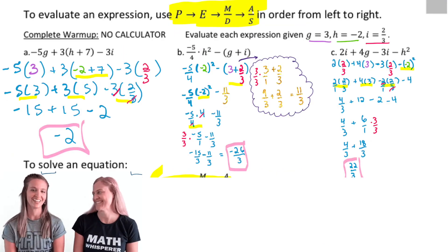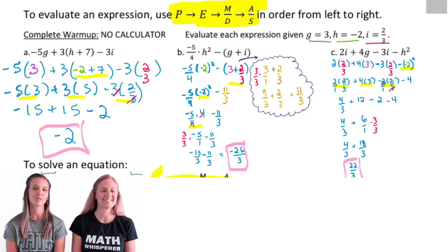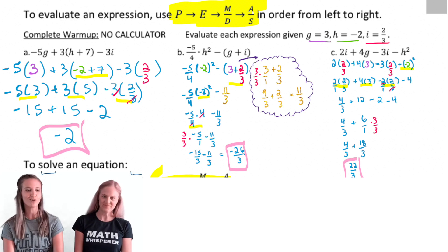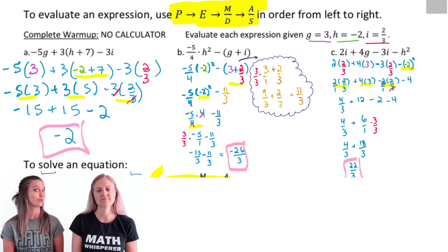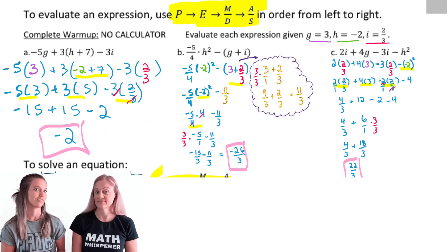All right, let's check the lesson opener and see how you did. Evaluate the expression given g equals 3, h equals negative 2, and i equals two-thirds.